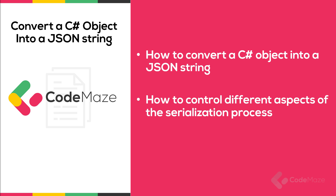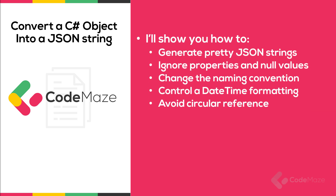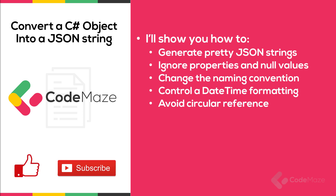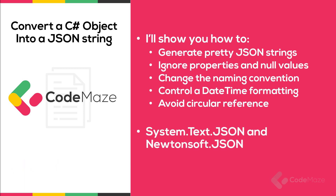You'll see how to generate pretty JSON strings, ignore properties and null values, change the naming convention, control datetime formatting, and also how to avoid circular references while doing serialization. A lot of different features that we as developers use every day. For this, I will use both System.Text.Json and Newtonsoft.Json libraries.